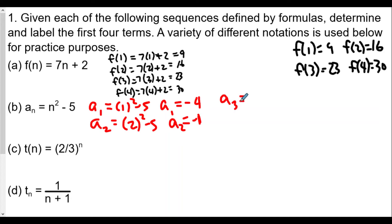a₃ is going to be 3² - 5, and that's 9 - 5, which is 4. a₄ equals 4² - 5, so 16 - 5, which means a₄ is going to be 11. So a₁ and a₂ are -4 and -1, and a₃ and a₄ are 4 and 11.